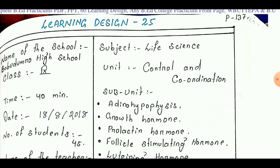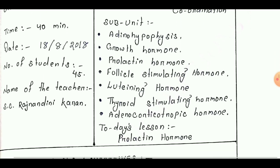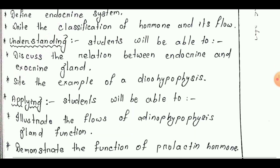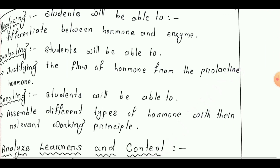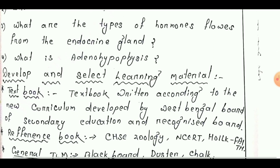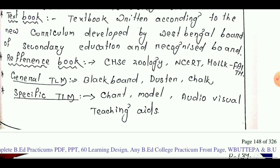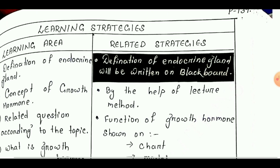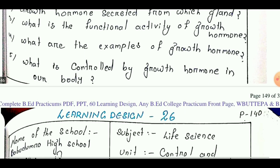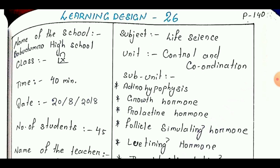We have reached learning design number 25, taken from Class 9. Today's lesson is 'Prolactin Hormone.' Learning goals are: remembering, understanding, applying, analyzing, evaluating, and creating. Next point is analyze learner and content, then develop and select learning materials. Next is learning strategy, then design for evaluation.